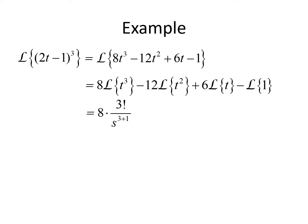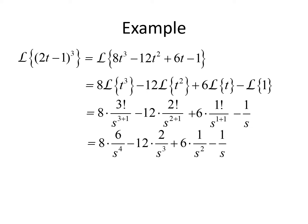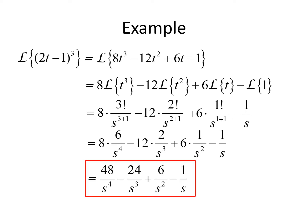Using the formulas: 3 factorial equals 1 times 2 times 3, which is 6. So we have 8 times 3 factorial over s to the 4th, minus 12 times 2 factorial over s cubed, plus 6 times 1 factorial over s squared, minus 1 over s. Simplifying: 8 times 6 over s to the 4th gives 48 over s to the 4th; 12 times 2 over s cubed gives 24 over s cubed; 6 times 1 over s squared gives 6 over s squared. The final answer is 48 over s to the 4th minus 24 over s cubed plus 6 over s squared minus 1 over s.